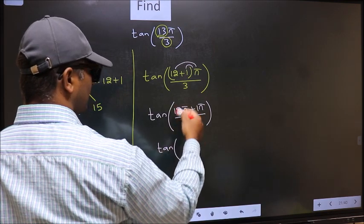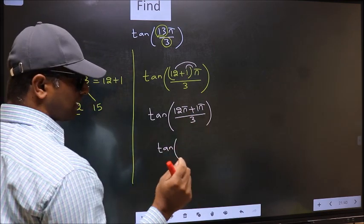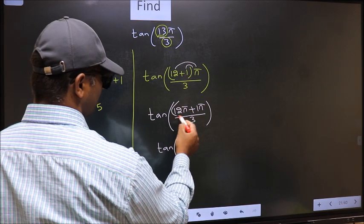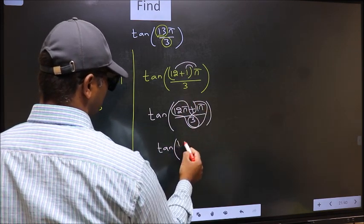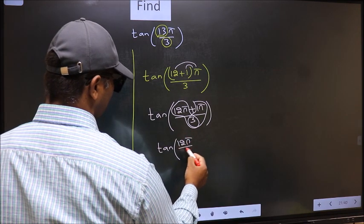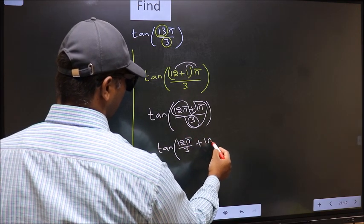Now tan. Over here you should split the denominator in this way: that is 12π/3 + 1π/3.